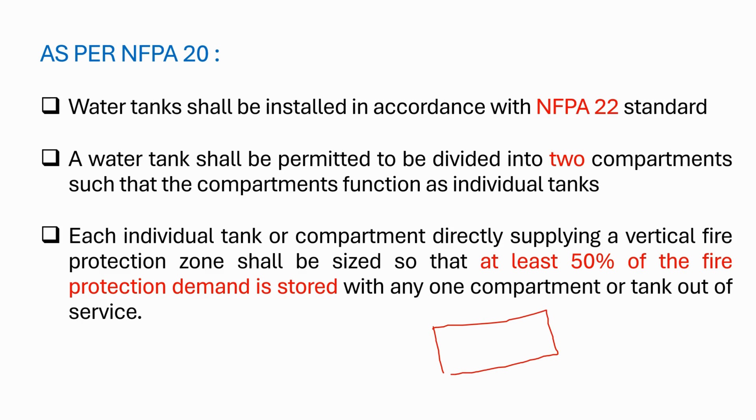For example, you have the requirement of 40,000 gallon capacity tank. This tank can be divided into two compartments or we can make it as two individual tanks. At least one tank shall have 50% of our demand. So if our demand is 40,000, then 50% of this 40,000 would be 20,000. So if it is 20,000, the other tank would also be 20,000 or other compartment is also 20,000 gallons. So whenever we are doing any maintenance, one tank can be cleaned, but the other tank shall have minimum 50% of our fire protection demand.